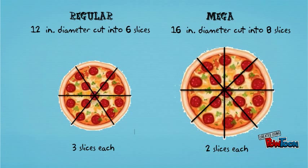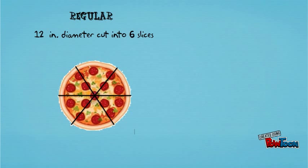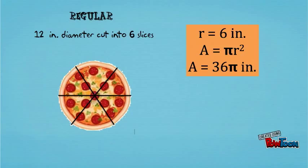Let's start with the regular pie. The diameter of the regular pie is 12 inches, which means that the radius is six inches. Be careful not to plug in 12 for the radius. This is one of the number one mistakes a student makes when a problem gives diameter and not radius.